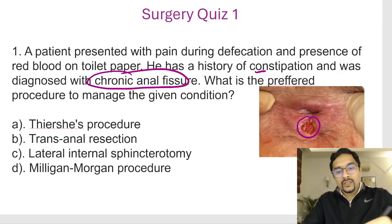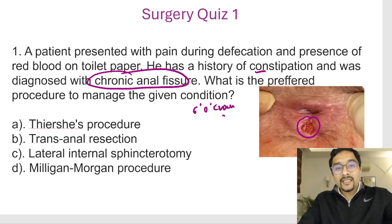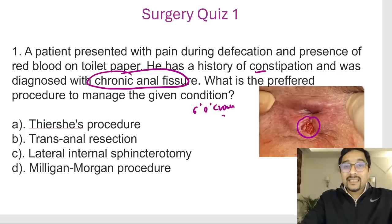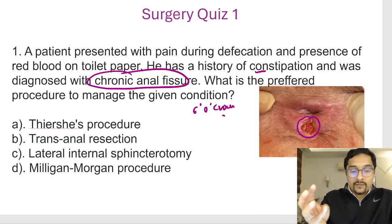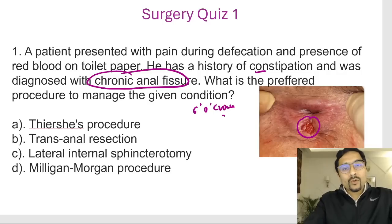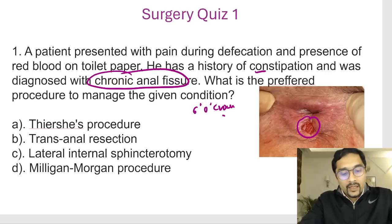Anal fissures are more common at the six o'clock position, which is the posterior midline. These fissures are extremely painful, which is why the patient has pain and constipation. Initially we do conservative management: sitz bath, laxatives, and applying xylocaine jelly. But if that doesn't work, we can do a lateral anal sphincterotomy.